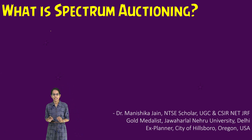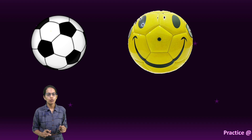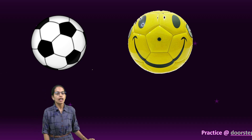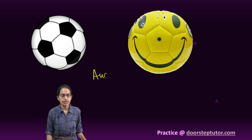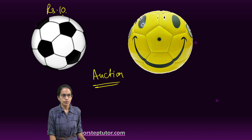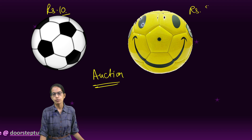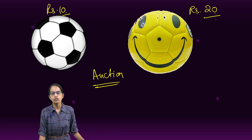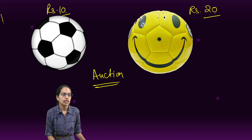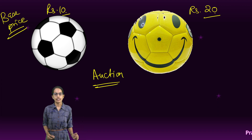What is spectrum auctioning? I begin with a very simple example to explain what auctioning is. I have two balls here. The first ball I want to sell for rupees 10, and the other ball I want to sell for rupees 20. Now this rupees 10 and rupees 20 is the base price that I have decided.